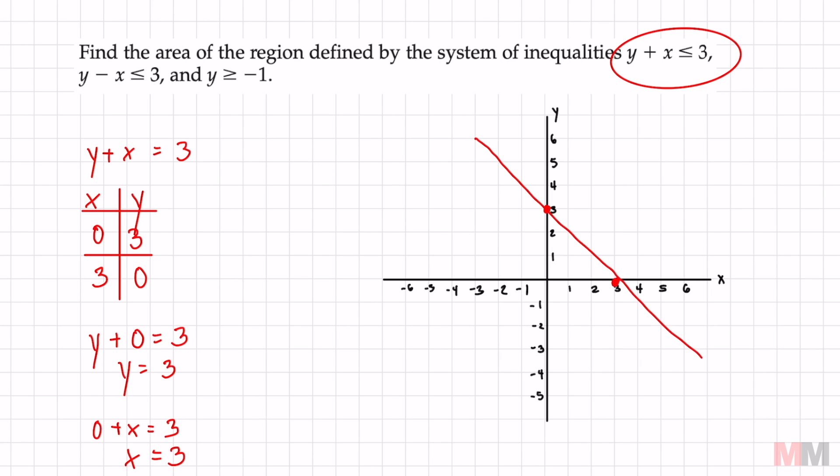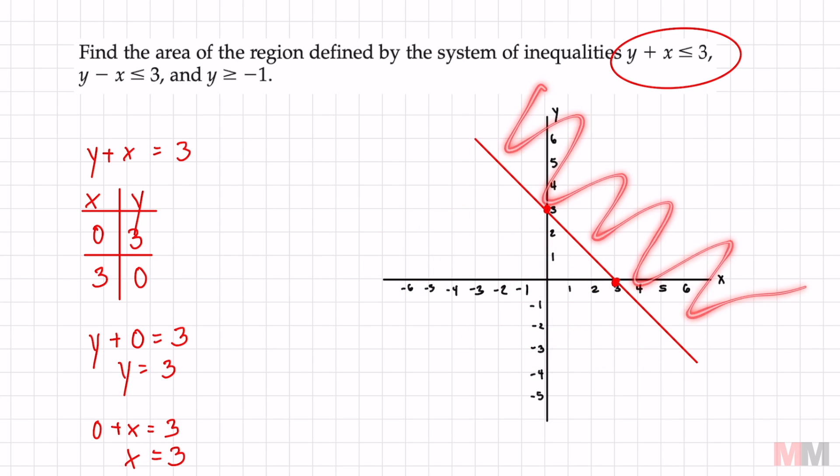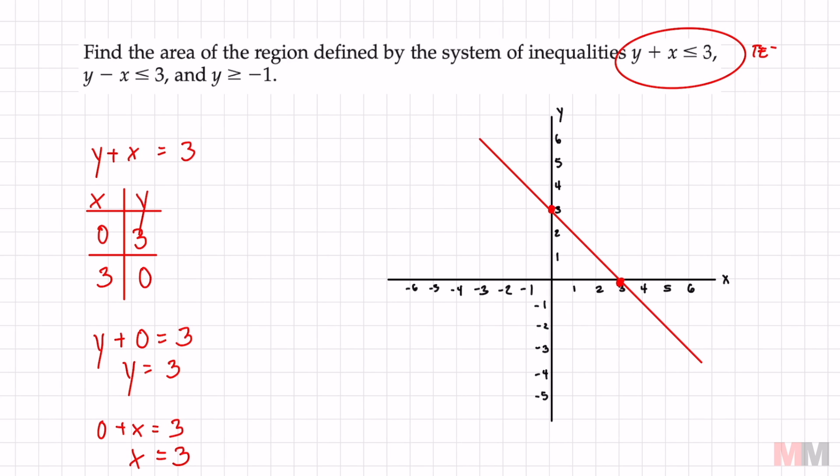That's going to be a solid line just like that to determine which side is shade because I'm either shading this way or I'm going to shade this way. Pick a point, a test point. I always pick zero zero because it's easy to plug in. I'm going to put the work right here. I'm going to plug in zero zero.